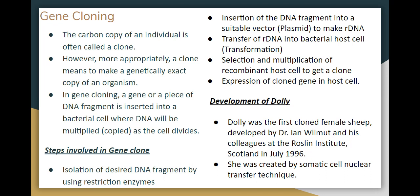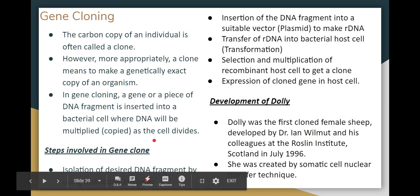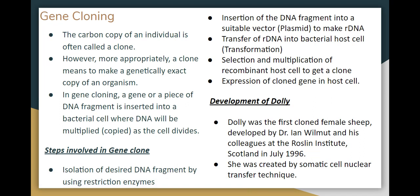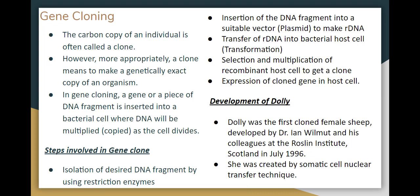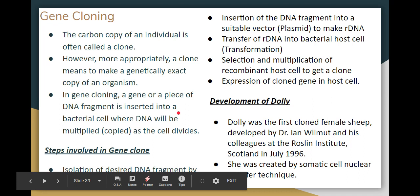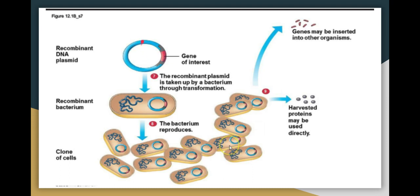Next is gene cloning. We can insert a gene into a bacterial cell using DNA. The DNA will multiply as the cell divides. The steps involved in gene cloning are: first, isolate a DNA fragment using a restriction enzyme; then insert the DNA fragment into a plasmid, which is a double-stranded small circular DNA. This insertion is called recombinant DNA technology.